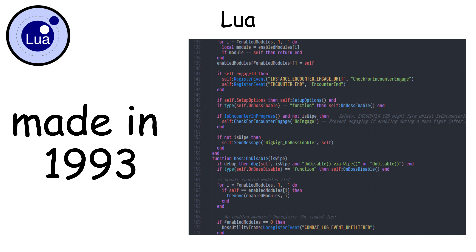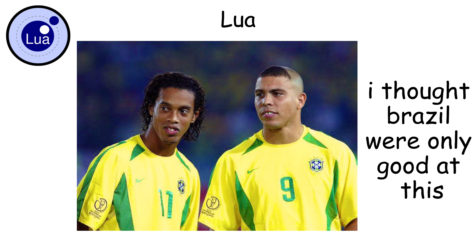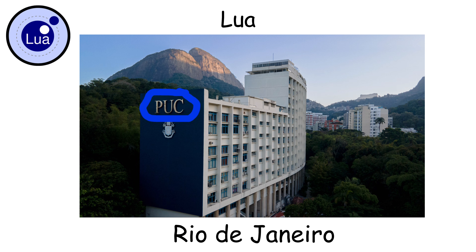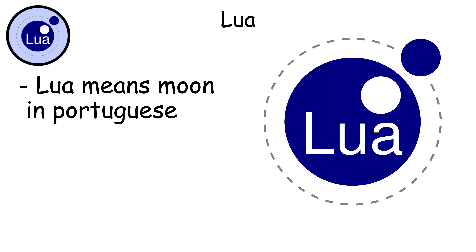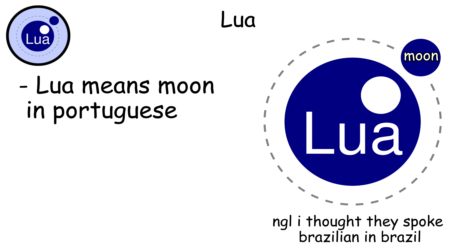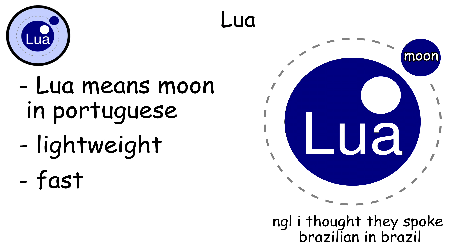Lua was created in 1993 by Brazilian computer scientists at the Pontifical Catholic University of Rio de Janeiro. The name Lua means moon in Portuguese, and it was designed to be lightweight, fast, and easy to embed into other applications.